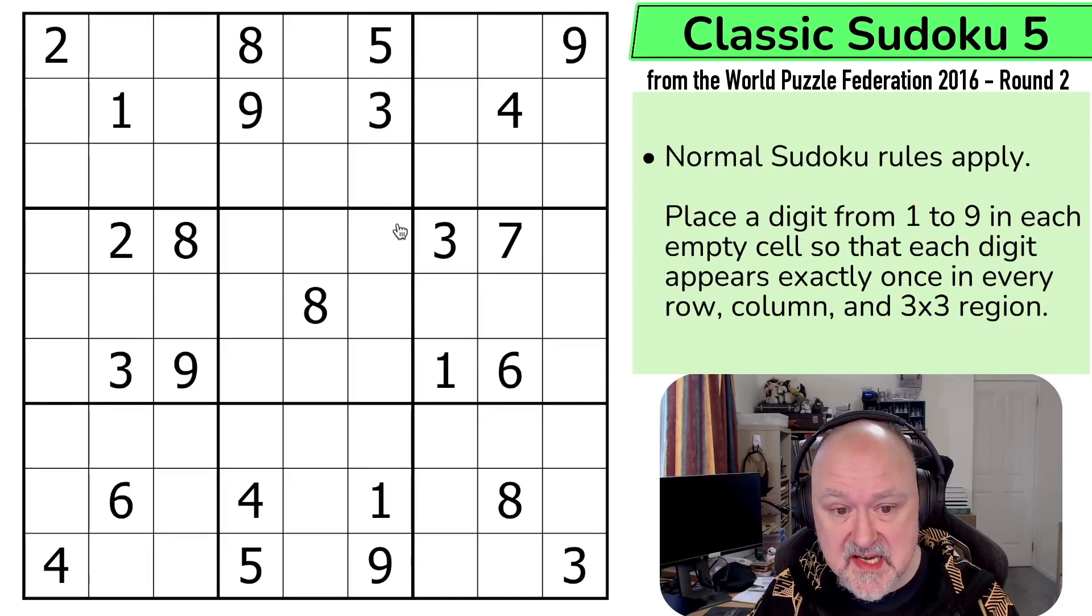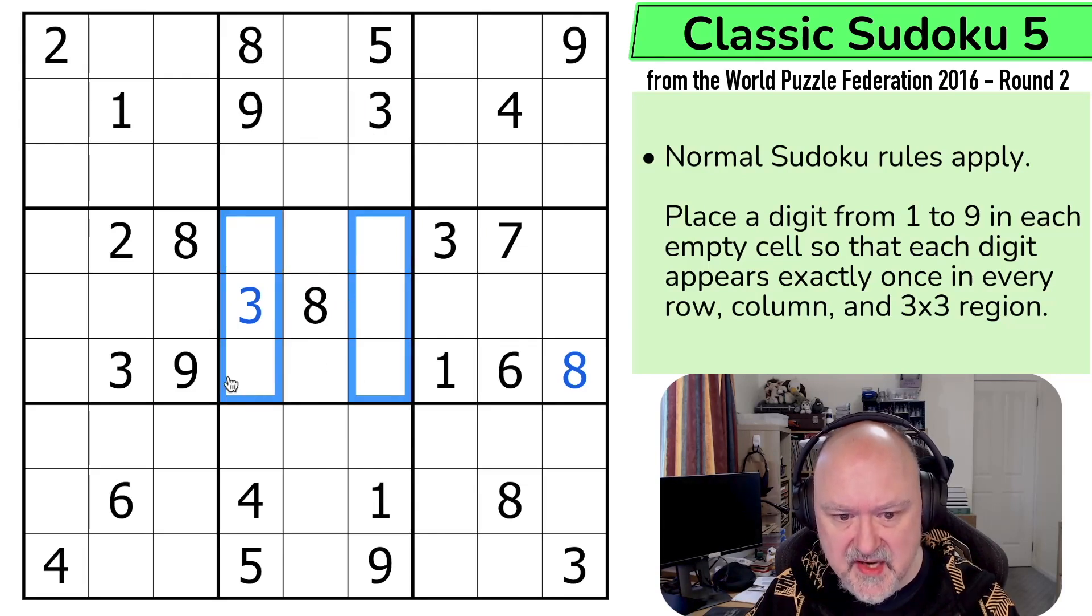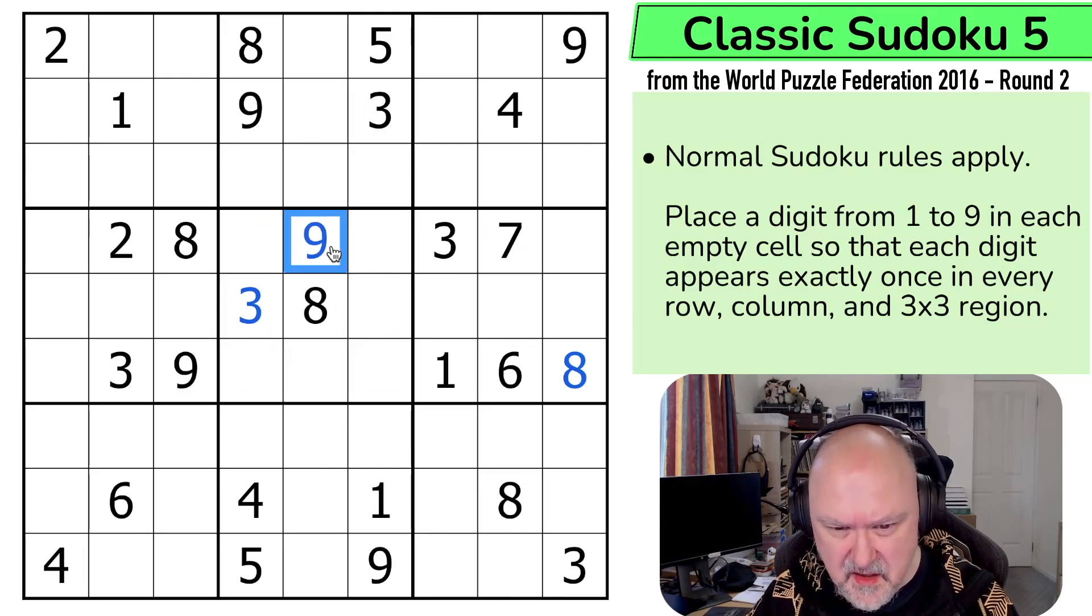So what can I see? I can see 8 and 8 means this has to be an 8. I can see 3 and 3 puts 3 in one of those two, but this 3 looks down saying not there. So this is a 3. 9 and 9 means 9's not in any of those. 9 is not there. That's a 9.